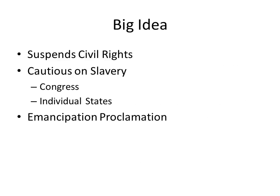So what's the big idea? First and foremost, Lincoln really suspends a lot of civil rights, and he does so because he believes it's necessary to win the war. Lincoln is also cautious on slavery in the beginning, and most of what's happening is Congress and individual states. But when Lincoln does take a step, he takes a big and very bold step and issues the Emancipation Proclamation, which signals really an end to slavery within the United States. See you in the next lecture.